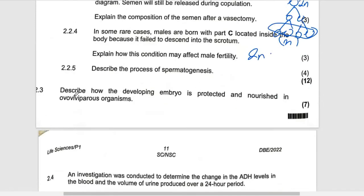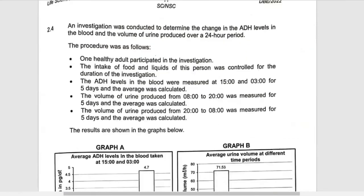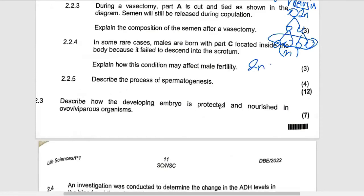They are saying: describe how the development of the embryo is protected and nourished in ovoviviparous organisms. These are animals where the egg develops inside the mother's body, but the embryo does not obtain nutrients from the mother — it obtains nutrients from the ovum. That's why it's called ovoviviparous.